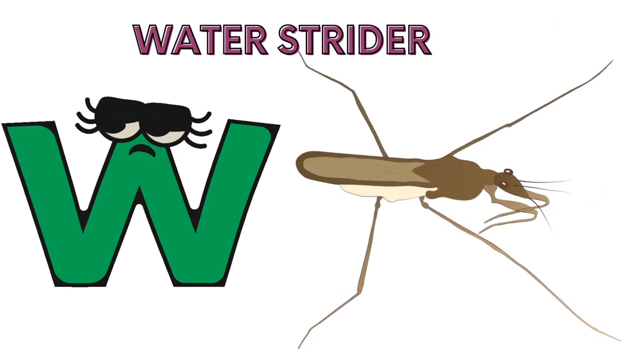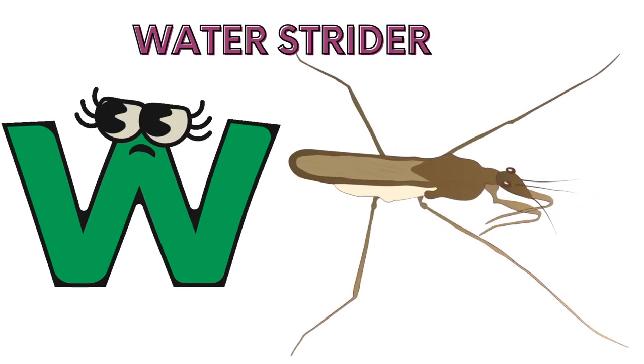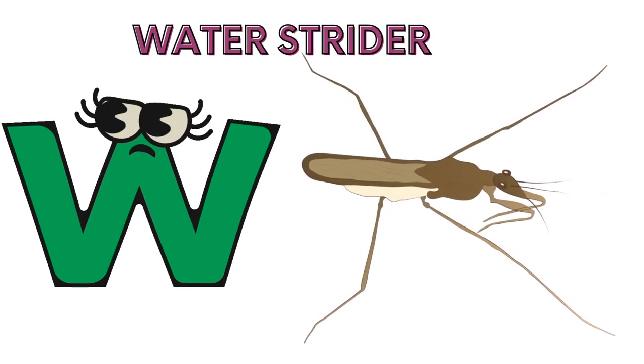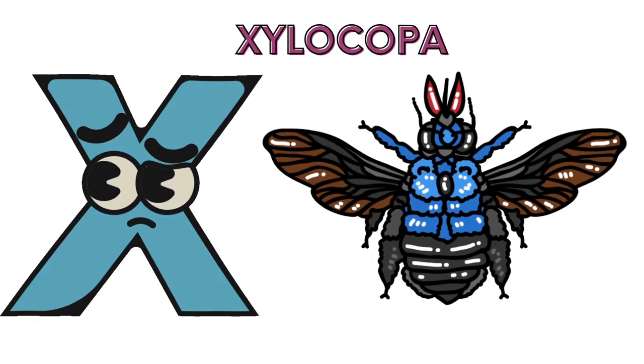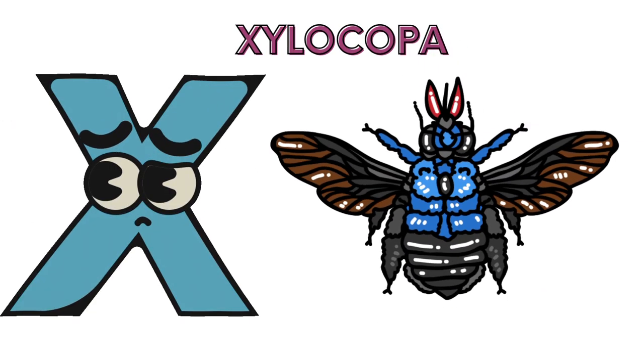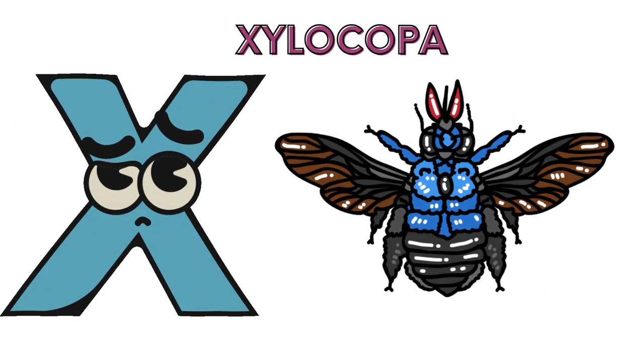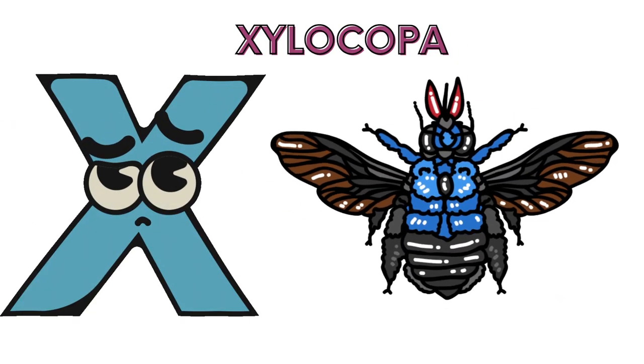W is for Water Strider. W, W, Water Strider. X is for Xylocopa. X, X, Xylocopa.